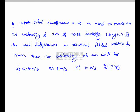A Pitot tube with coefficient of discharge 1.0 is used to measure the velocity of air with mass density 1.2 kg per meter cube. If the head difference in the field water is 12 mm, then what is the velocity of air?